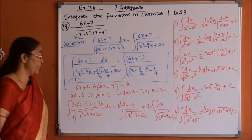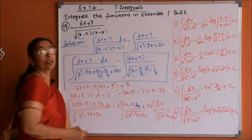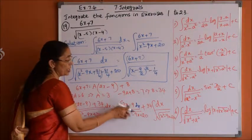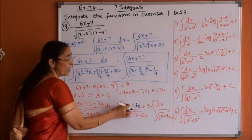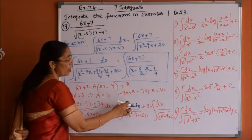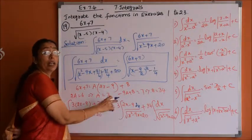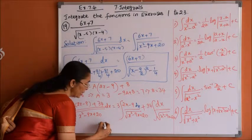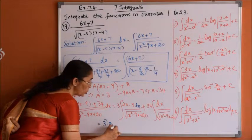The first integration is in the form where the numerator is the derivative of the expression under the root. If we let t equal x squared minus 9x plus 20, we get dt equals (2x minus 9) dx, so it becomes the integral of dt over root t, which gives 2 root t. Therefore the first part equals 3 times 2 root t, which is 6 root(x squared minus 9x plus 20).